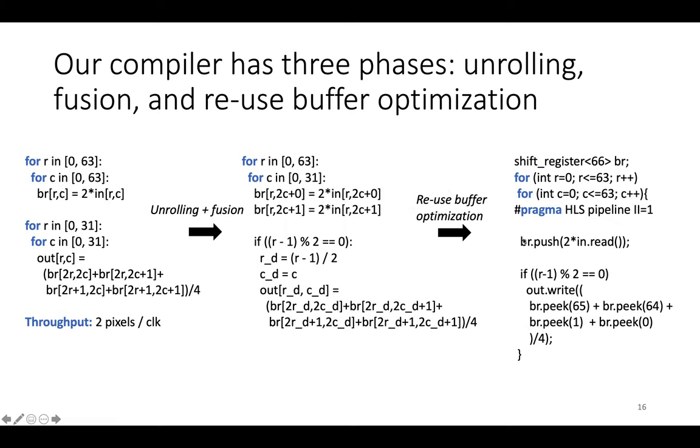Then we're going to put it through a reuse buffer optimization that figures out how to convert memories in the program into streams or shift registers or line buffers. It's going to apply pipeline pragmas and do some other minor hardware-specific steps. And then that output is going to be sent to an HLS tool.